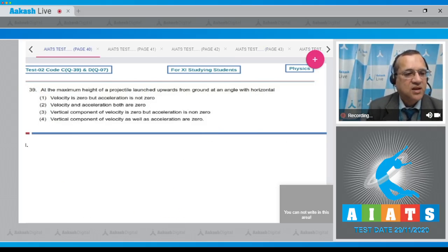Question number 39: At the maximum height of a projectile launched upwards from the ground at an angle with horizontal. The first option: velocity 0 but acceleration is non-zero. Second: velocity and acceleration both are 0. Third: vertical component velocity as well as acceleration are 0.